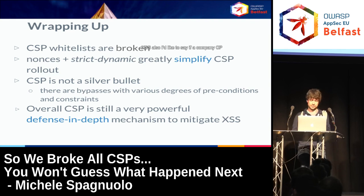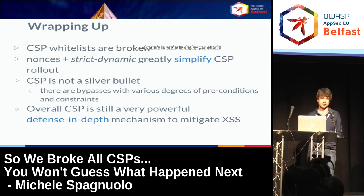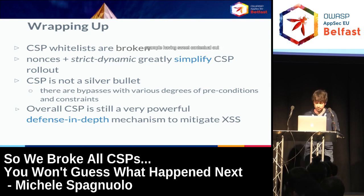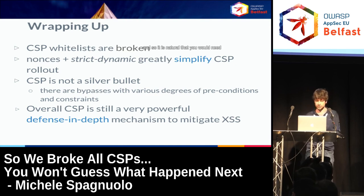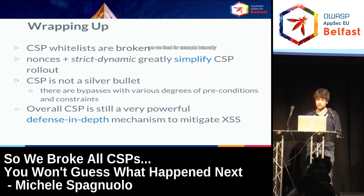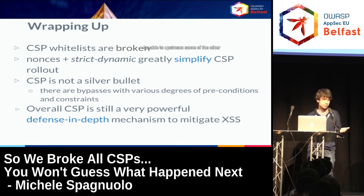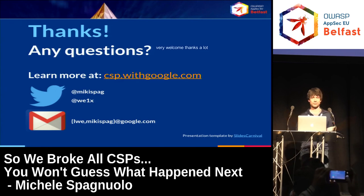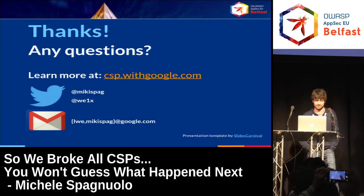CSP is not a silver bullet — this is very important and I'll always stress it. There are bypasses; this is a mitigation and a defense-in-depth mechanism. The bypasses are becoming more and more technically complex, which means we're doing a good job. Good CSP does not come for free — even if strict-dynamic is easier to deploy, you should still invest effort in using a strict contextual auto-escaping templating system and patching any problematic JavaScript frameworks like jQuery. We've fixed Google Closure bypasses internally and hope to upstream fixes to jQuery and other commonly used libraries.